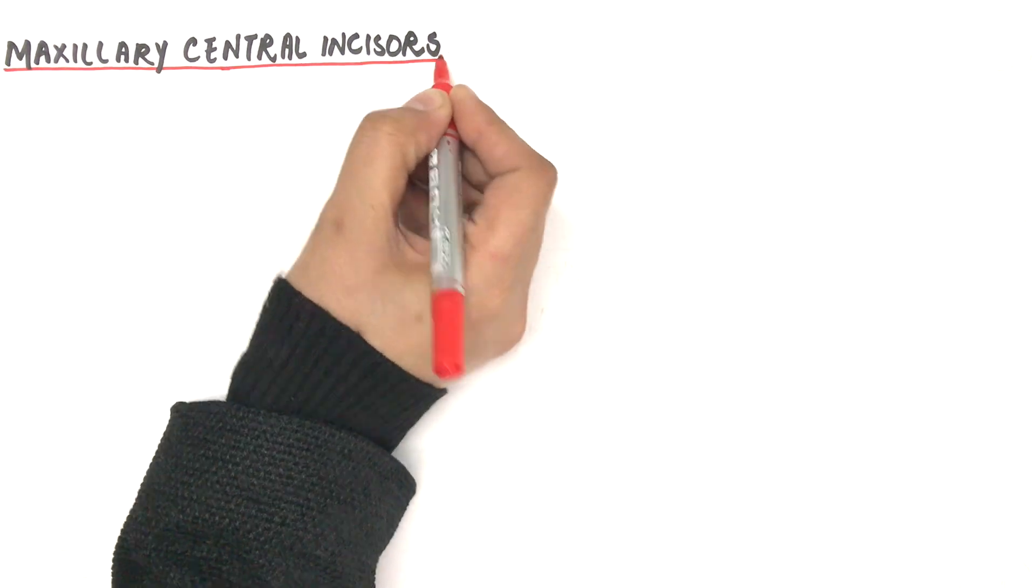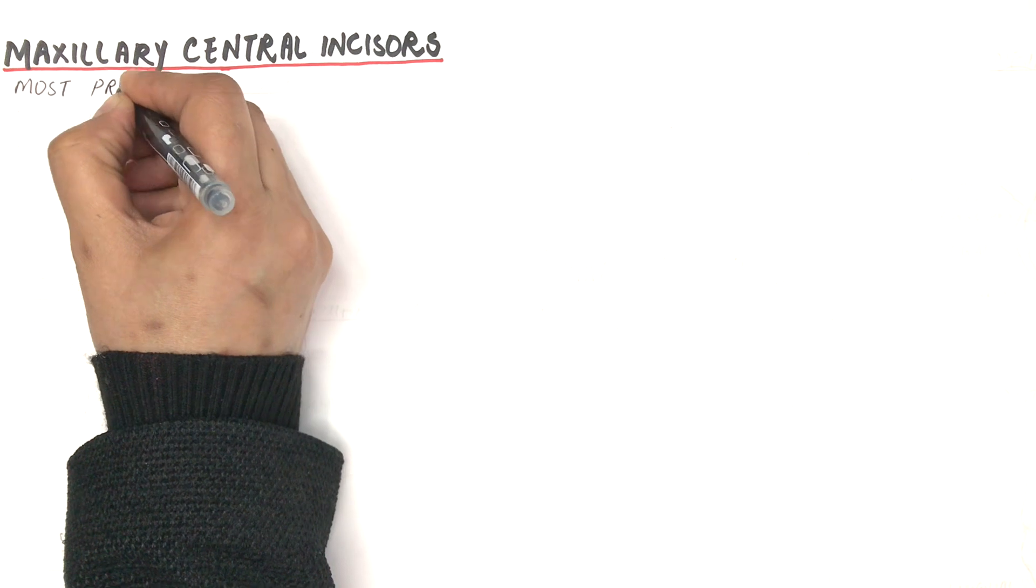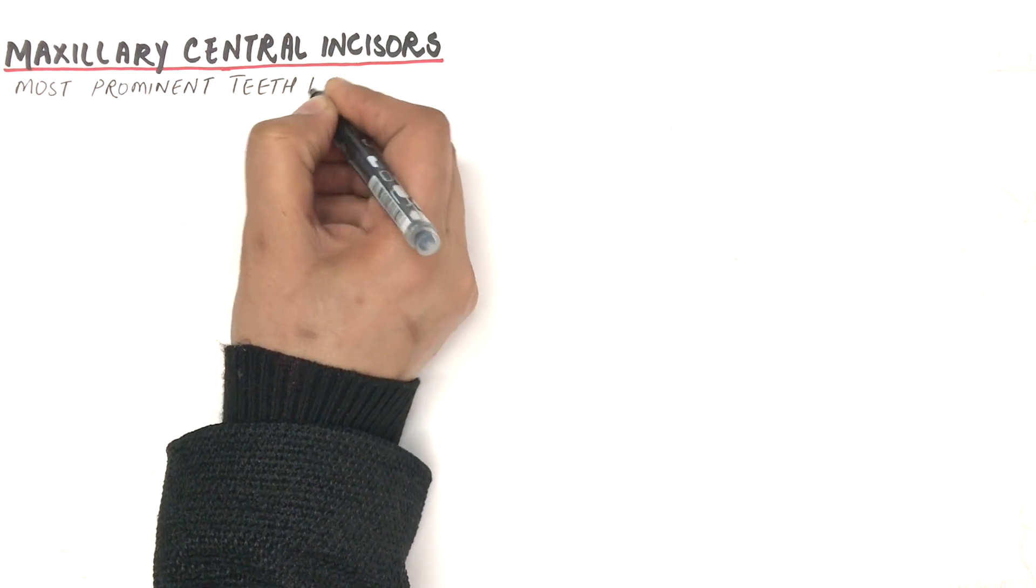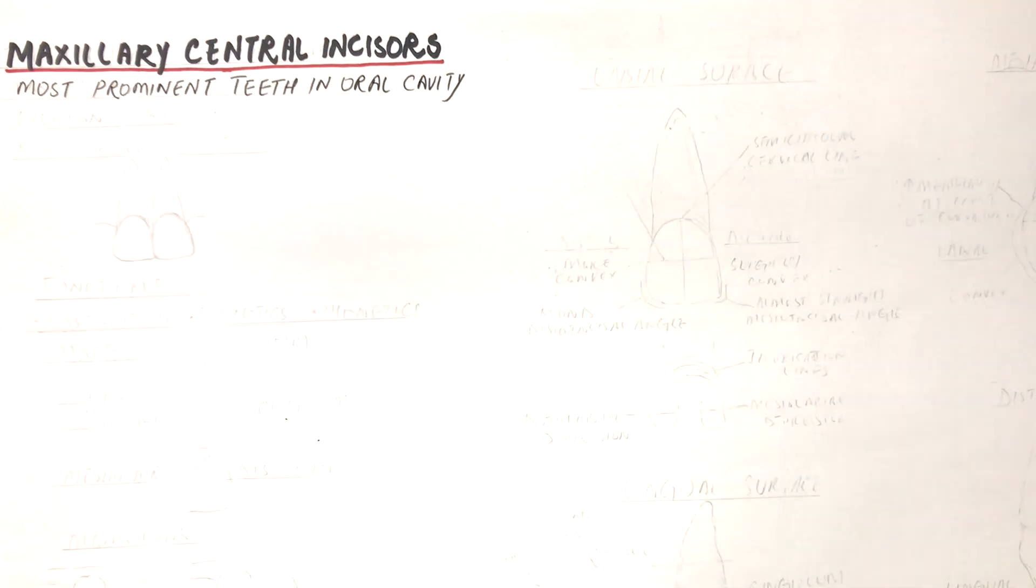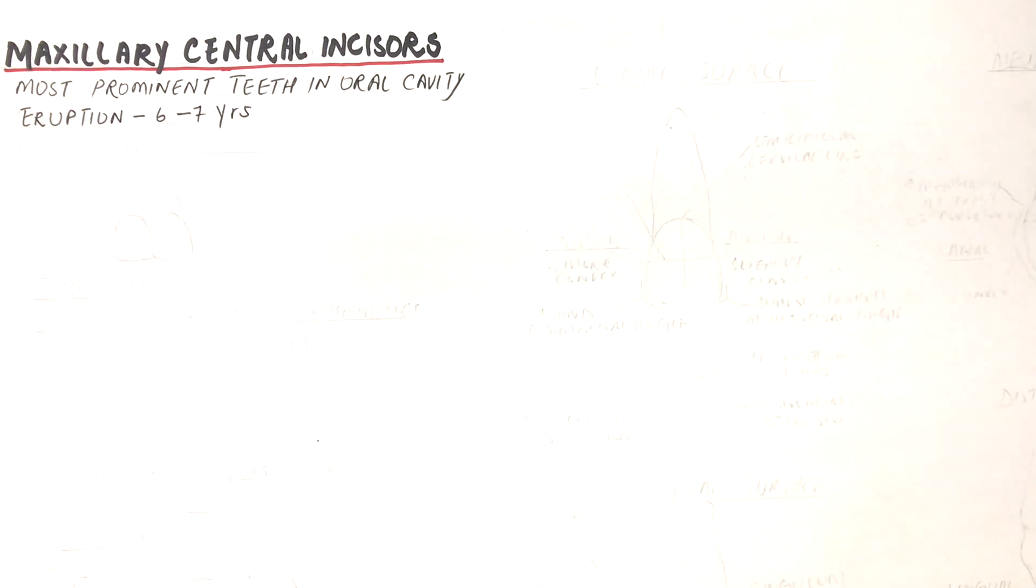The maxillary central incisors are two in number. They are the most prominent teeth in the oral cavity. They erupt at the age of six to seven years and their root is completed at about the age of ten.